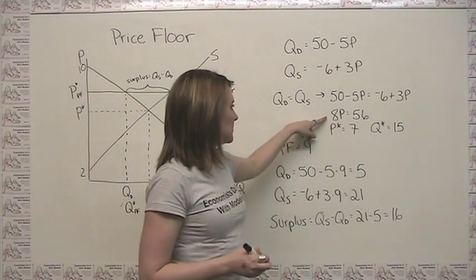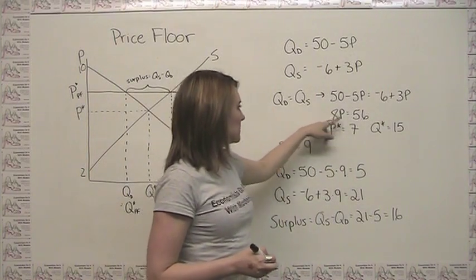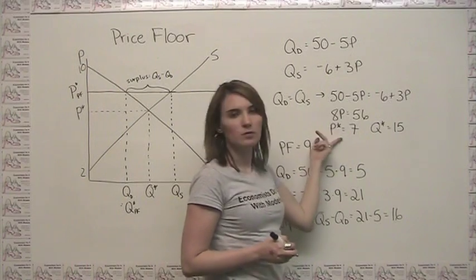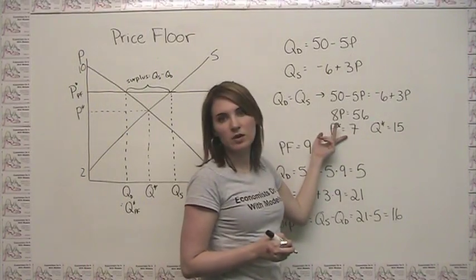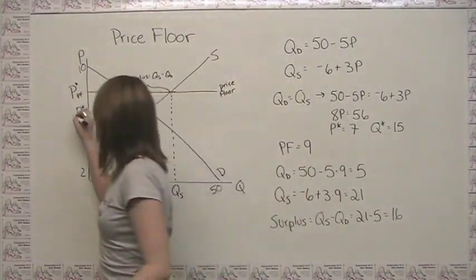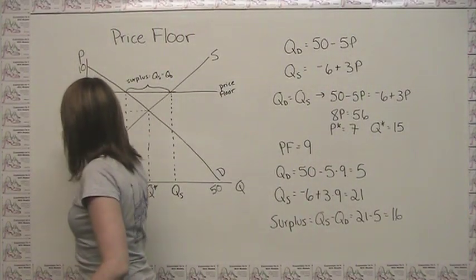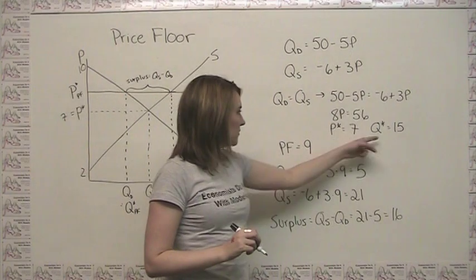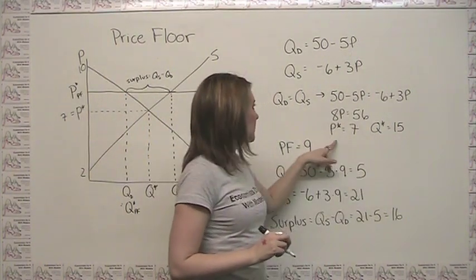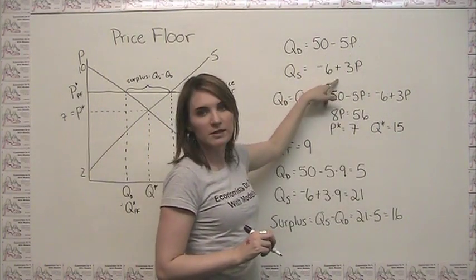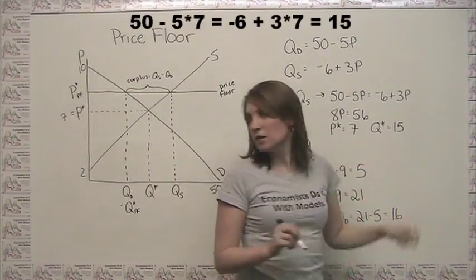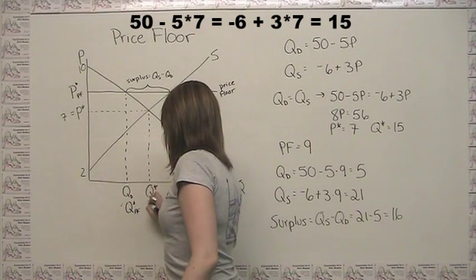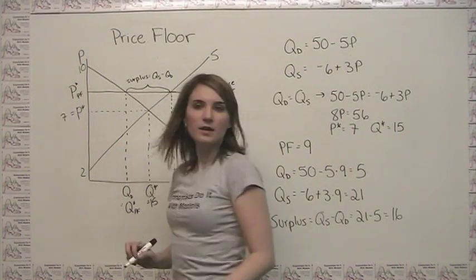Doing a little bit of algebra, we see that that happens where 8p is equal to 56, or where p is equal to 7. So our free market equilibrium price is at 7. And our free market equilibrium quantity is just found by plugging 7 back into either of our equations, and that happens where q is 15. So our free market equilibrium quantity is 15.